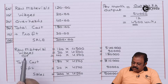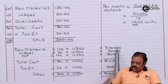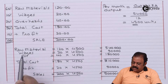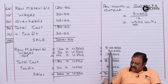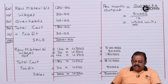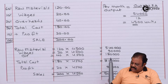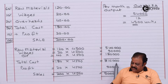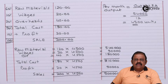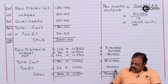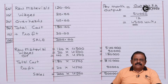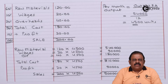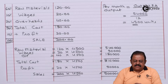Per month: raw material consumption rupees 5,40,000; per month wages rupees 90,000; per month overheads rupees 1,80,000; total cost rupees 8,10,000; profit rupees 90,000; total sales rupees 9 lakhs. Let us now calculate current assets and current liabilities.